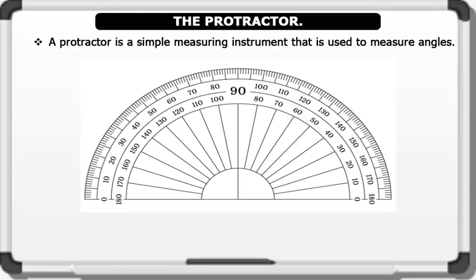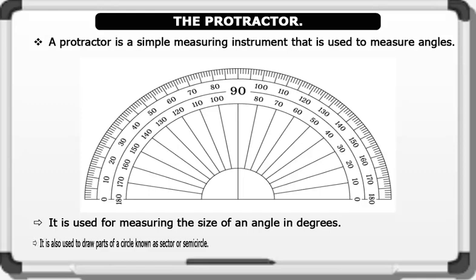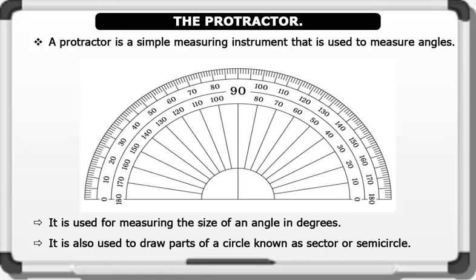The uses of a protractor include: 1. It is used for measuring the size of an angle in degrees. 2. It is also used to draw parts of a circle known as sector or semi-circle.